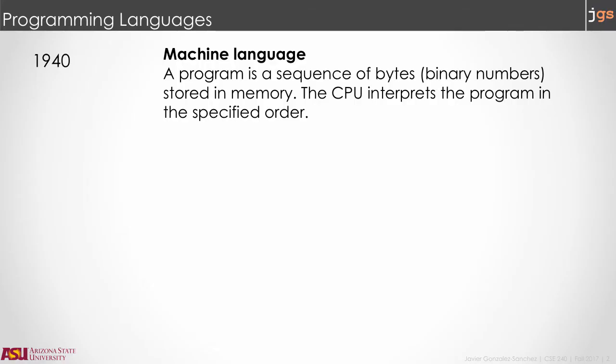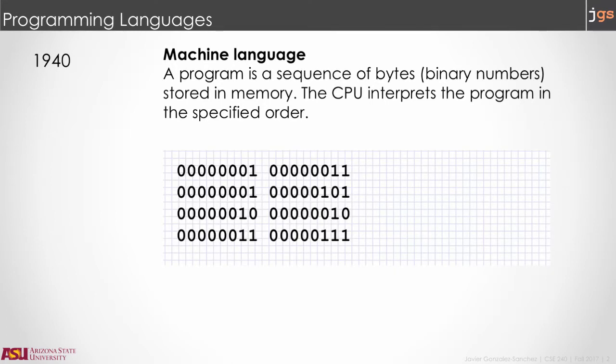In 1940, programming was all about using binary code, machine language. A program was a sequence of binary numbers. Engineers put those numbers in the computer memory. They used binary to write the software. These binary numbers represent two main things.